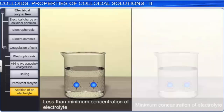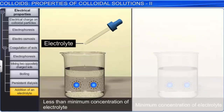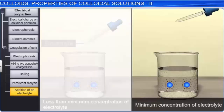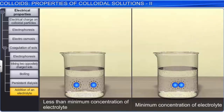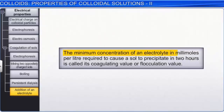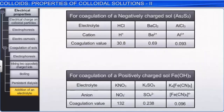The coagulation of a sol by an electrolyte does not take place until the electrolyte added has a certain minimum concentration in the solution. The minimum concentration of an electrolyte in millimoles per litre required to cause a sol to precipitate in two hours is called its coagulating value or flocculation value. It is important to note that the smaller the flocculation value, the greater is the coagulating power of the electrolyte. The Al³⁺ cation and the Fe(CN)₆⁴⁻ anion have extremely low values of coagulation power and therefore exhibit greater coagulating capacity as compared to other ions in their category.